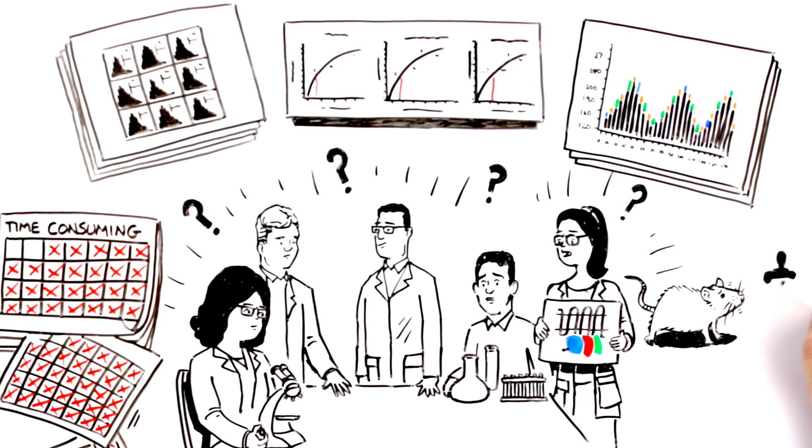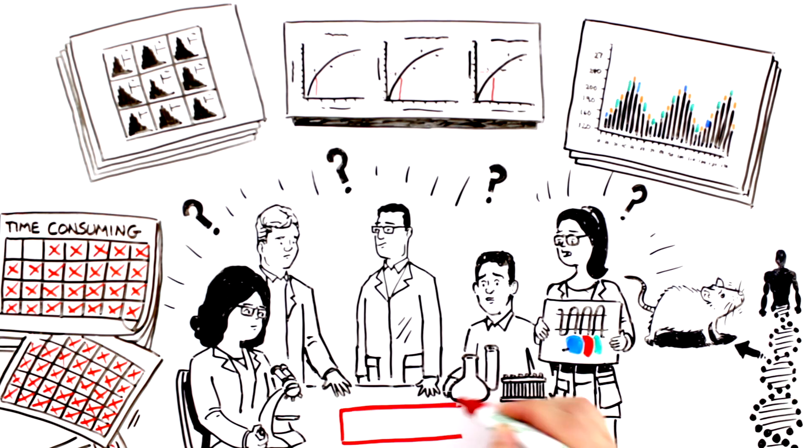When they had exhausted every avenue, their next attempt was with humanized mice. Despite their best efforts, even this method failed to produce functionally active binders against the target.